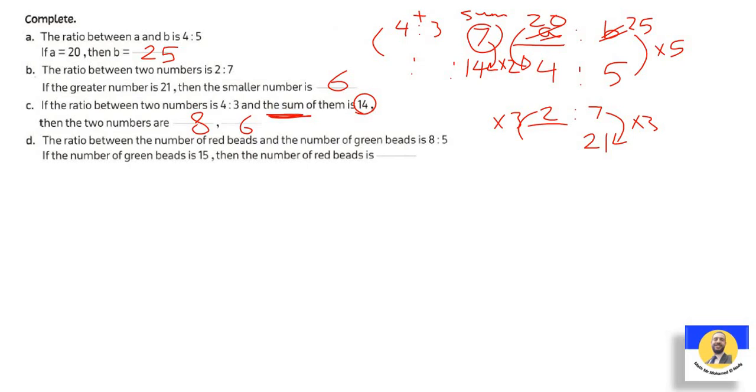Letter d: the ratio between the number of red beads and green beads is 8 to 5. We have red and green - red is 8 and green is 5. Write it as a fraction. If the number of green beads is 15 - which one is green, first or second? The second. So write 15 under 5 under green. What is the number of red? 5 becomes 15 how? Multiplying by 3. So 8 by 3 equals 24.